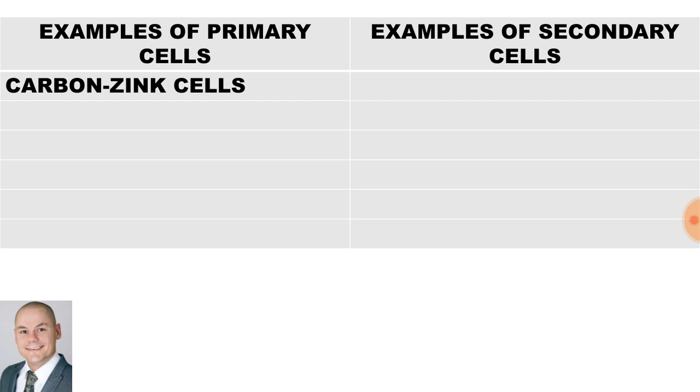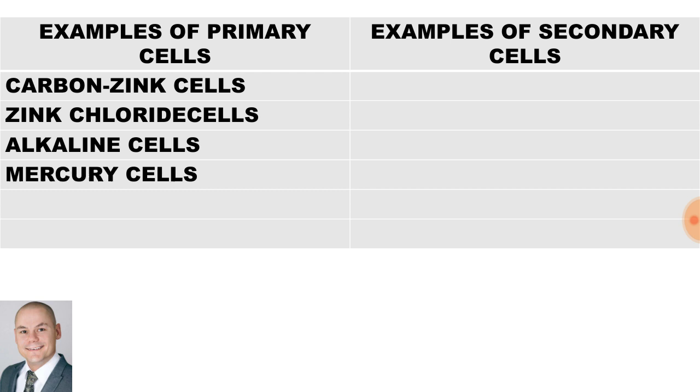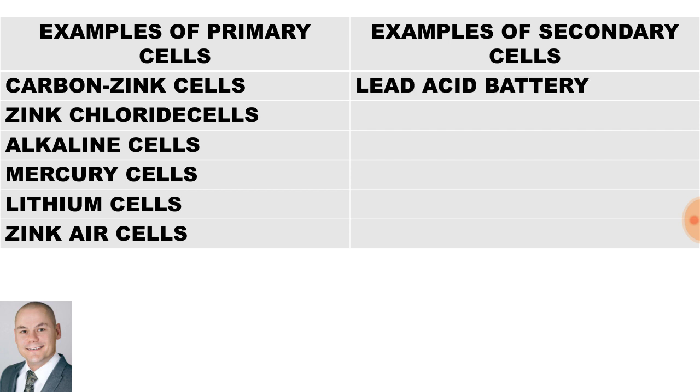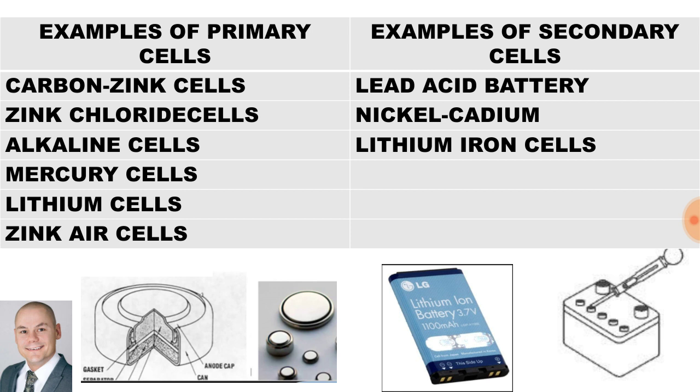Examples of primary cells: carbon zinc, zinc chloride, alkaline, mercury, lithium, and zinc air. Examples of secondary cells: lead acid battery, nickel cadmium, and lithium iron.